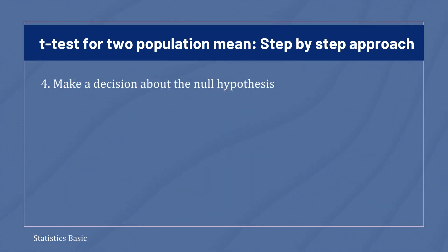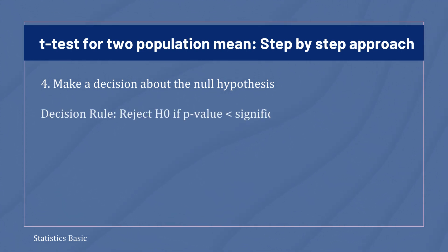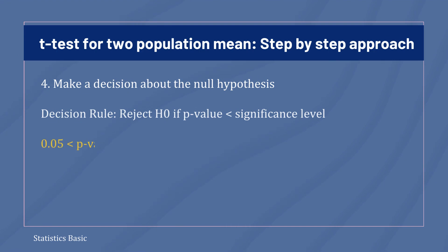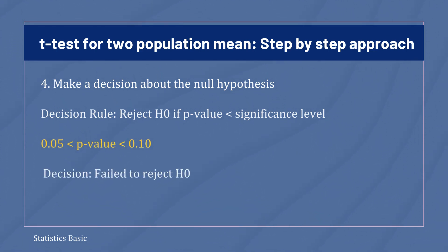Now, in the fourth step, use the p-value approach to make a decision regarding the null hypothesis, which says to reject the null hypothesis if the p-value is less than the significance level. Since the p-value is greater than the significance level of 0.05, we fail to reject the null hypothesis.